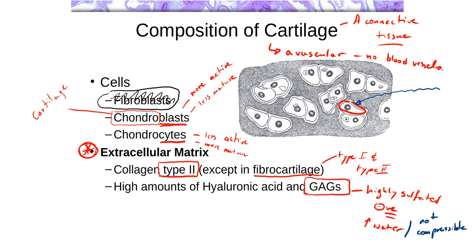Cartilage must resist compression since it is very much a structural component. The glycosaminoglycans exist in the form of proteoglycans, which have a protein core with glycosaminoglycans sticking out in many directions — giving them a 'bottle brush' appearance. In cartilage, there are a lot of glycosaminoglycans around each protein core, so a large amount of water is packed within this matrix.